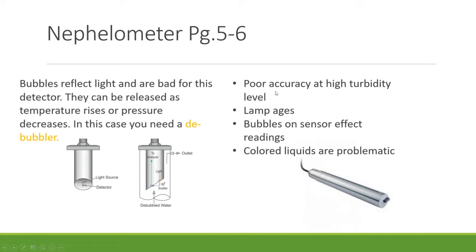Specific issues with nephelometers include poor accuracy at high turbidity levels, lamp aging (common to all technologies), bubbles on the sensor affecting readings, and colored liquids being problematic. One of the devices we'll discuss is well suited for colored liquids, and another for high turbidity levels. There's a table in the ILM that summarizes applications for all types on one page.